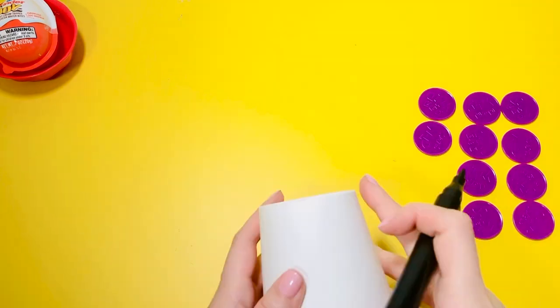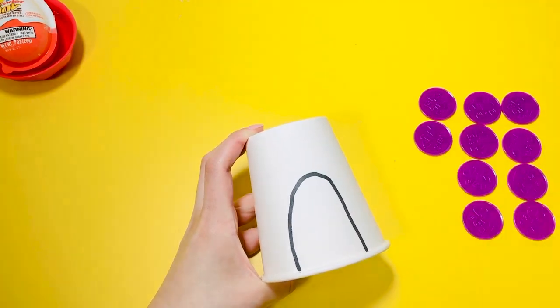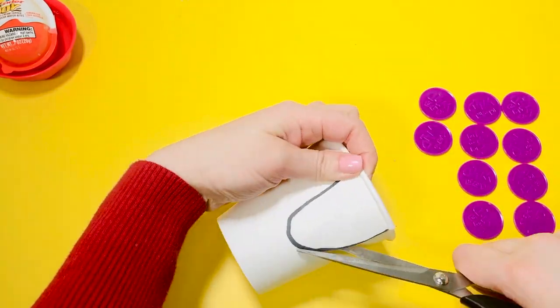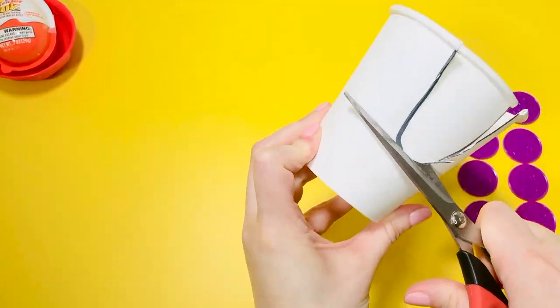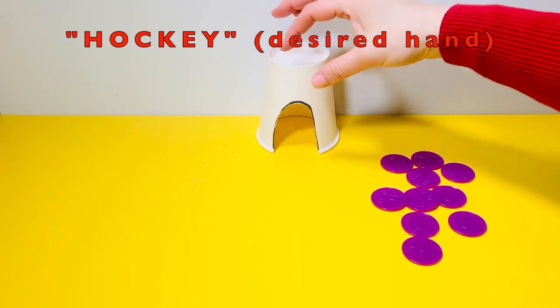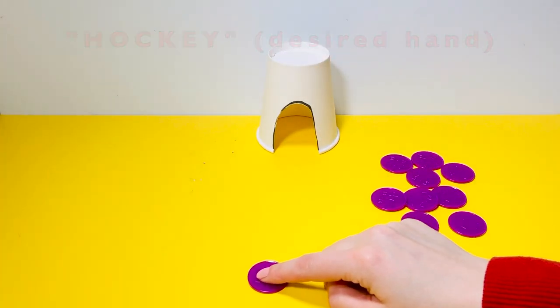We're going to play hockey with coins. Let's make a fence, draw a door in the cup, and cut it out. Parents can help. Game number five: place your cup further away so we can play hockey. We're going to